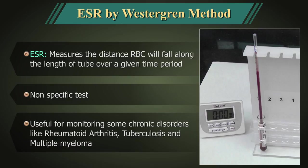The erythrocyte sedimentation rate measures the distance red blood cells will fall along the length of a vertical tube over a given time period. Although it is a non-specific phenomenon, it is clinically used in certain chronic disorders, for example rheumatoid arthritis or tuberculosis, as an index of progress of the disease.